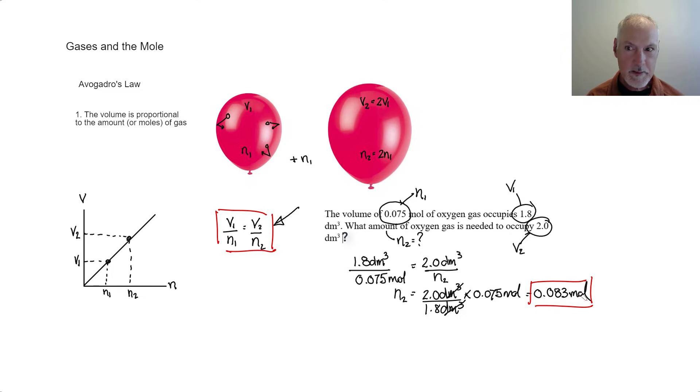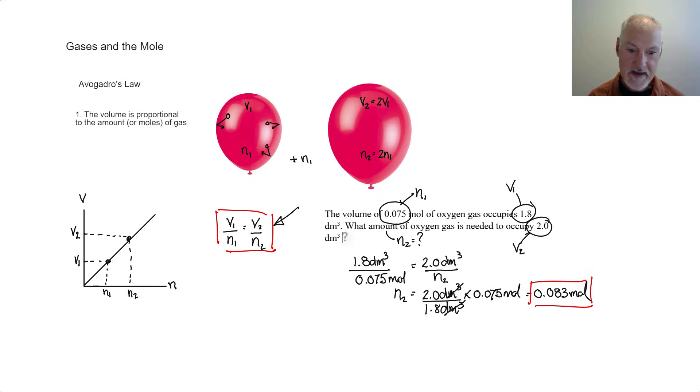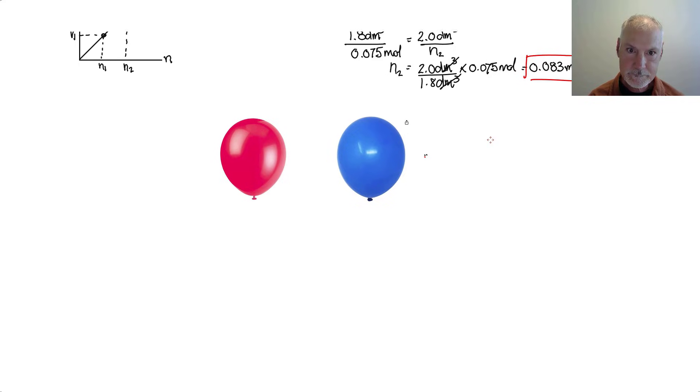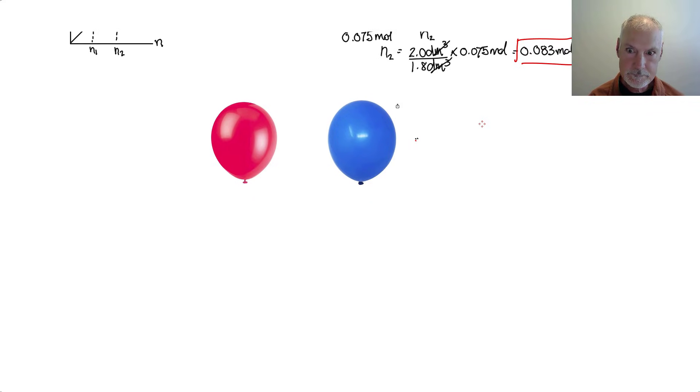So there's an application of the first statement in Avogadro's law. Now let's look at the second idea in his law. The second idea is that the volume of gas is not affected by the type of gas.